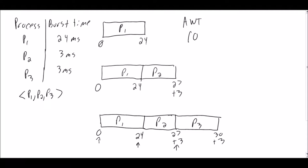So we have 0 plus 24 plus 27, and then you divide by the number, by the amount of numbers that you have, which is in this case 3. And you get 17 milliseconds average wait time.